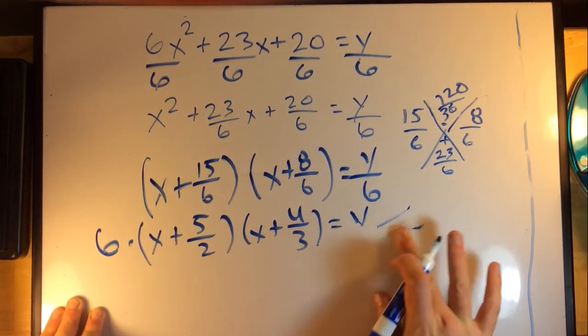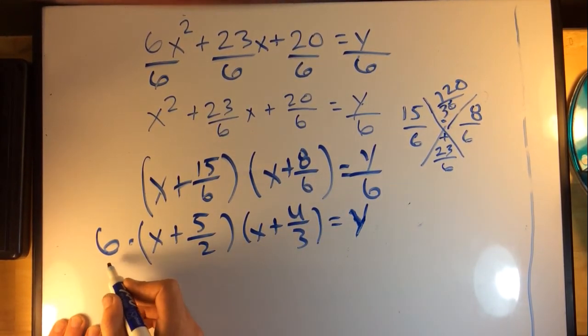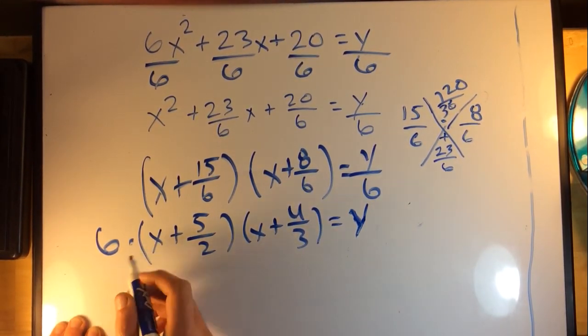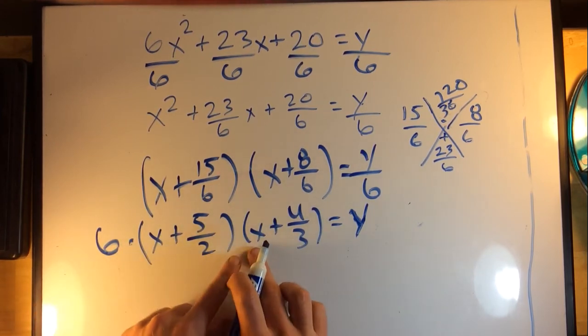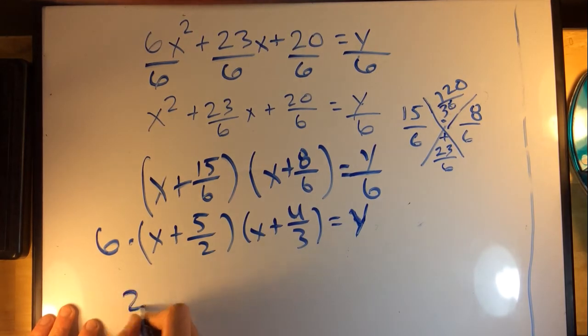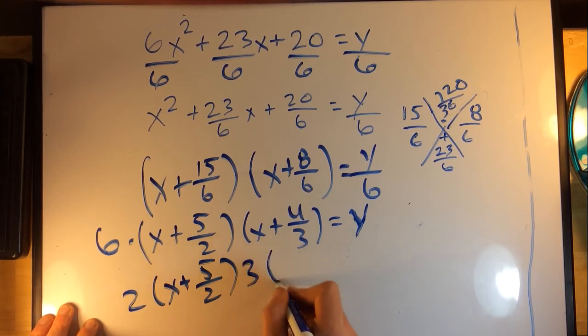Now if I were to reorder this 6, if I just distribute the 6 so I have multiply by 2 on this and multiply by 3 on this, so that could just look like 2(x + 5/2) times 3(x + 4/3), because 6 is just 2 times 3.